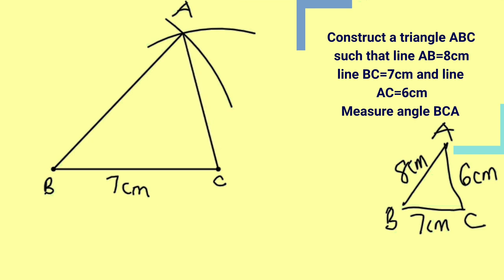Alright, this is triangle ABC we just constructed. So let me finish labeling. This is 8cm, this is 6cm. What you are going to do next is to measure angle BCA.